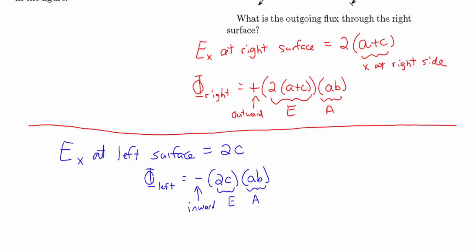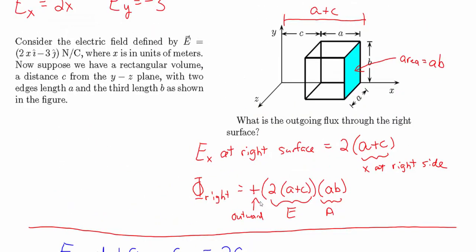The top and bottom surfaces each have area a². Only the y-component of the electric field passes through the top or the bottom — the x-component does not. The y-component is a constant −3 N/C, pointing downward. So the electric field through both the top and the bottom has a strength of 3 N/C pointing downward.